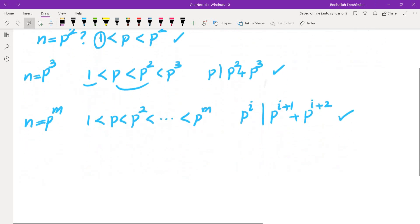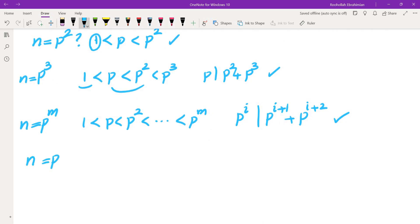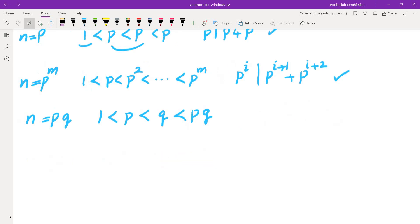So all of the prime powers are a possible answer to the problem. But maybe there is more. So let's try something else. Let's try pq. Then the divisors are going to be 1, p, q (I'm going to assume that q is more than p), and pq. So the conditions that we need are 1 divides p plus q, which obviously does happen.